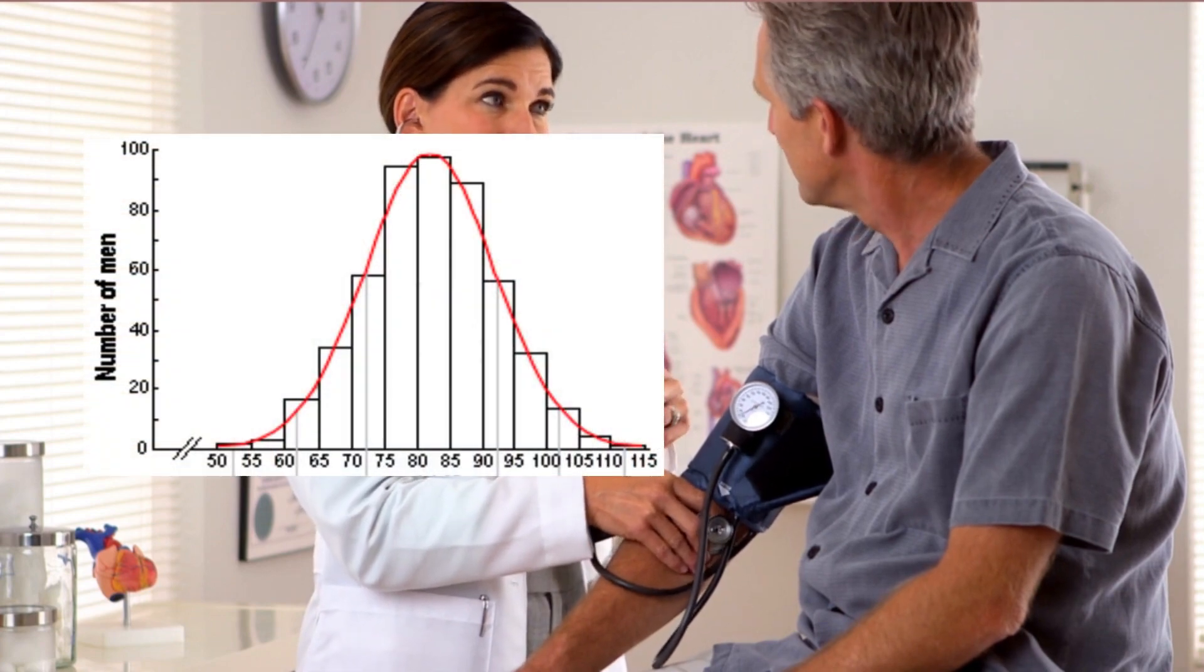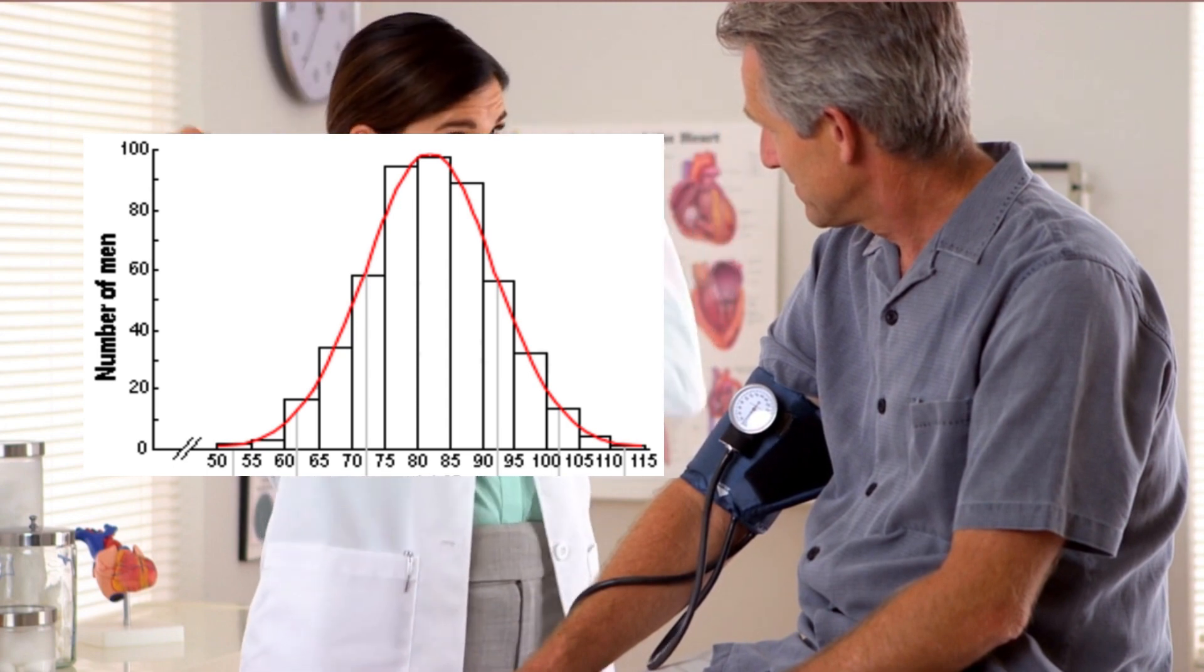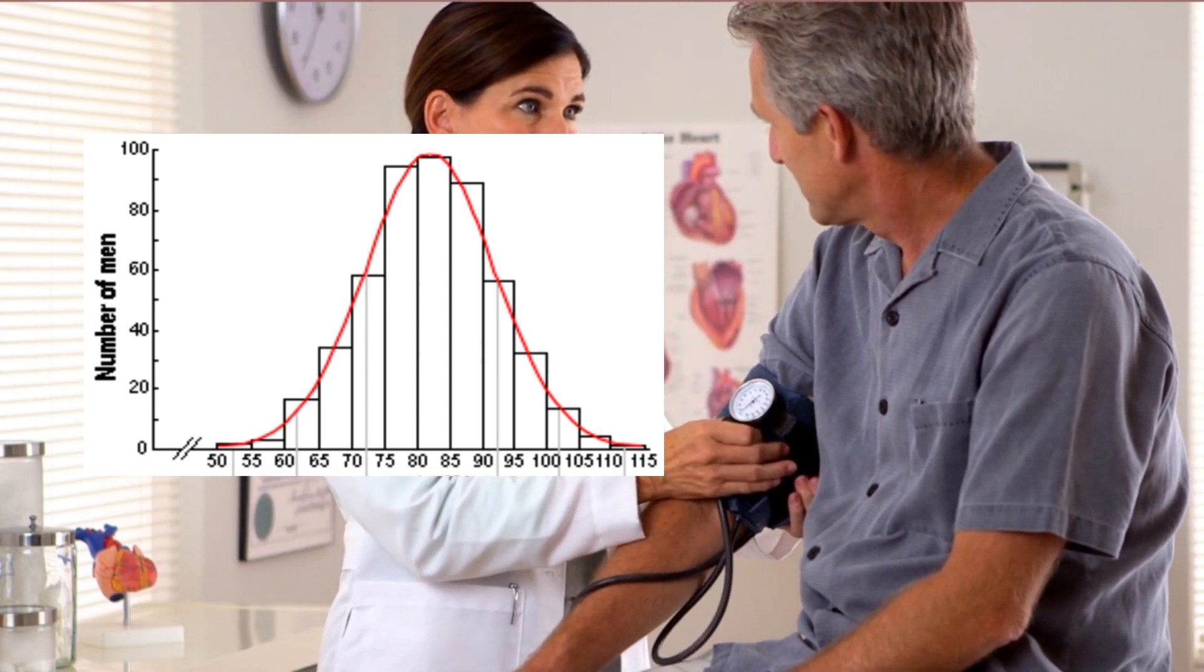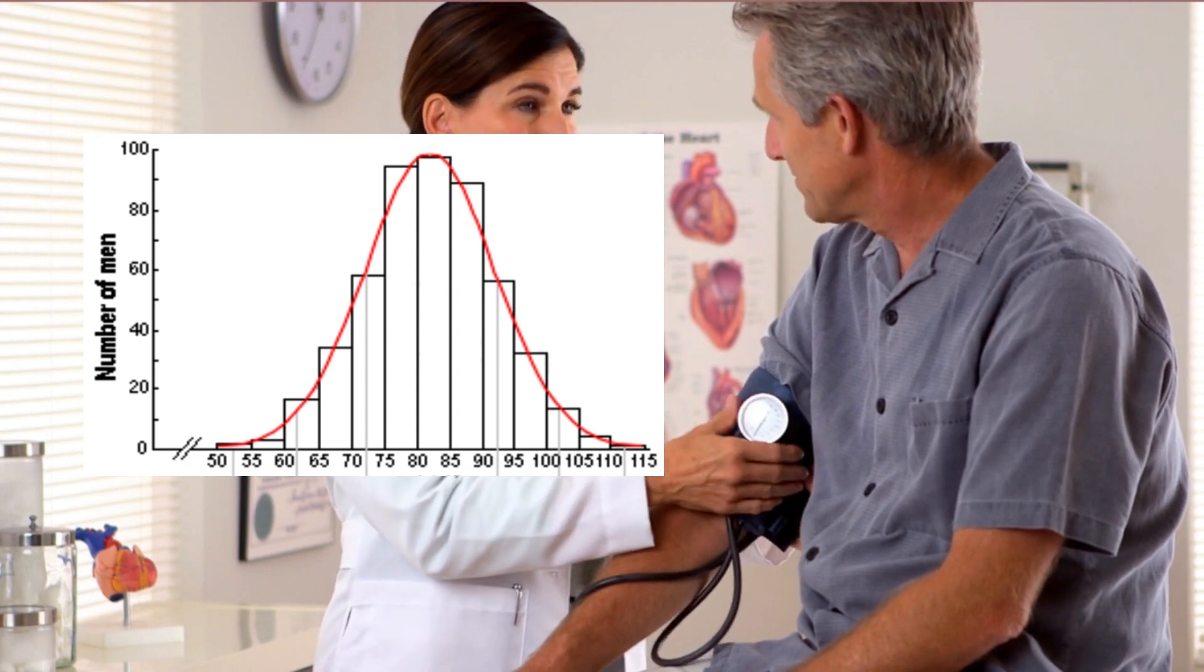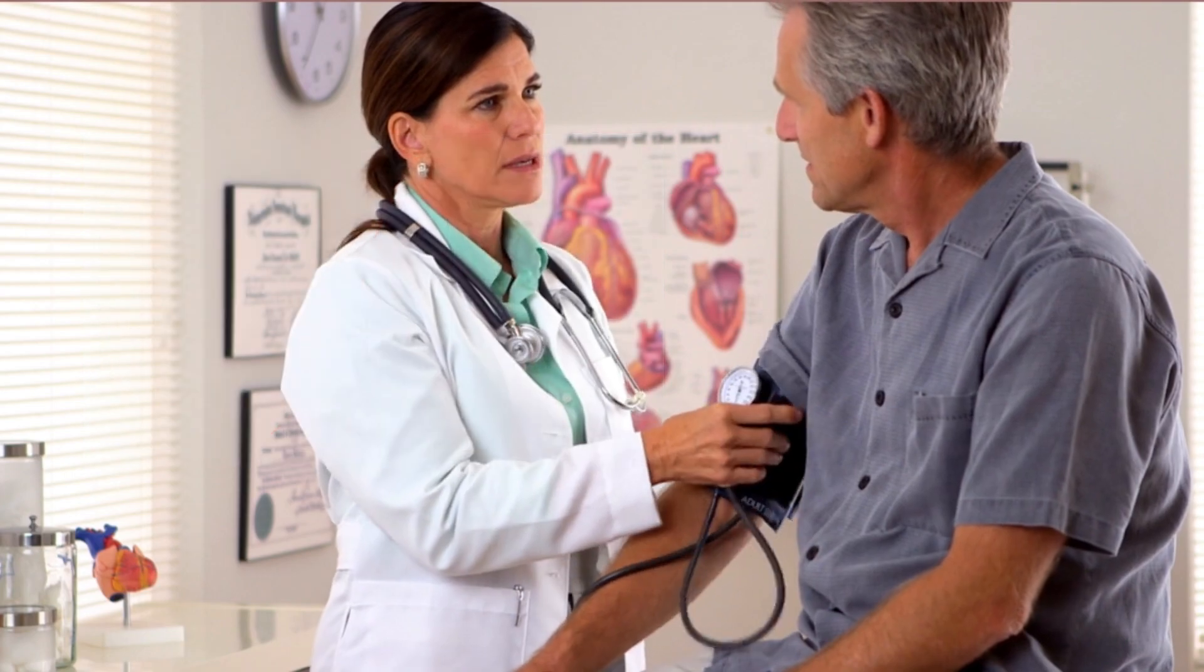Here we're looking at the distribution of the diastolic blood pressures of men. Same thing we notice: mean in the middle, where a large proportion of data is. As we get to the extremes, the proportion of data rapidly decreases, meaning less and less men have really low blood pressures or really high blood pressures.